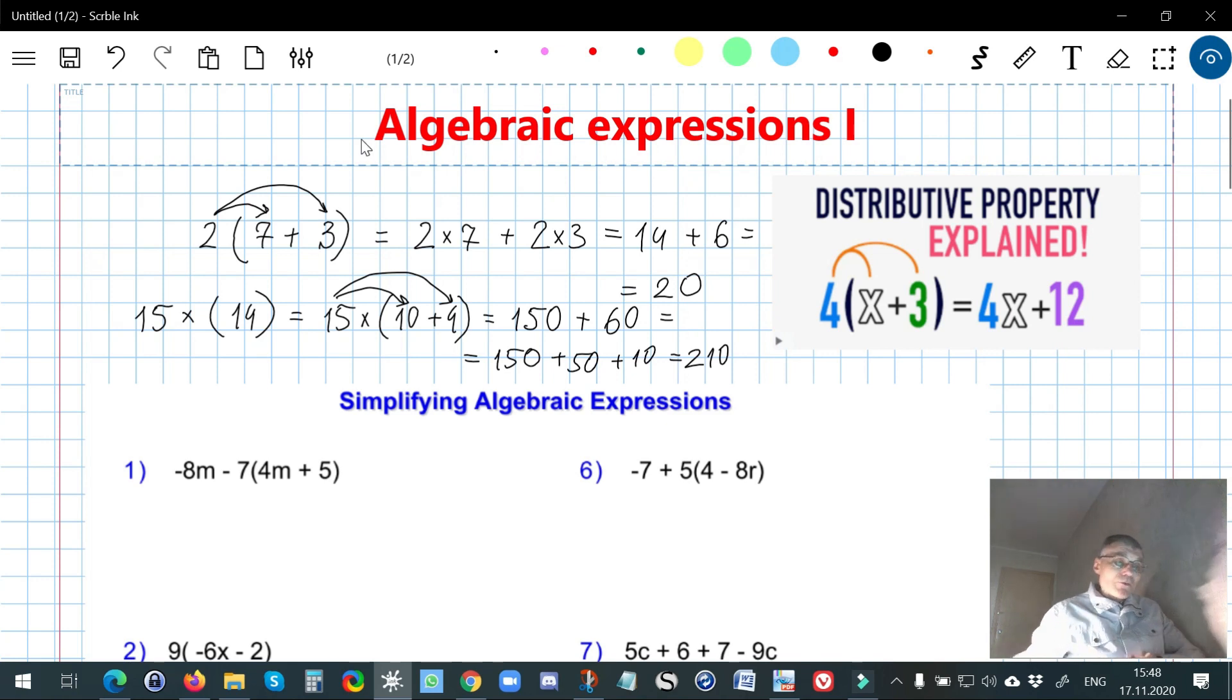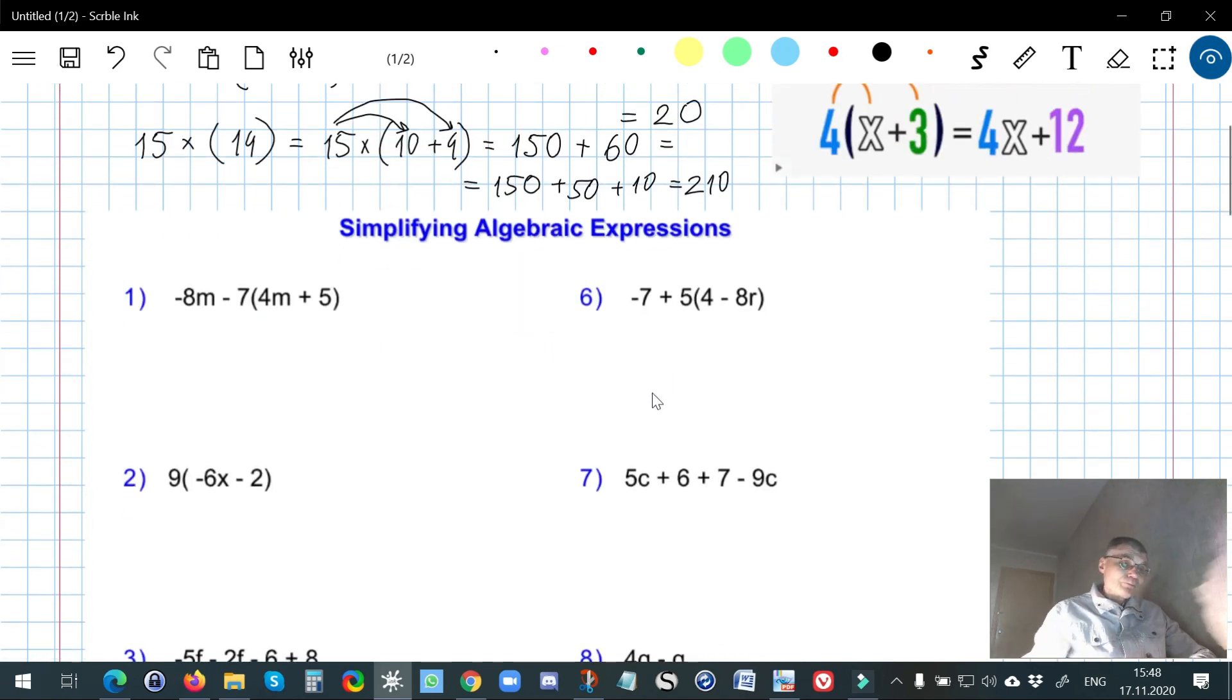Let us do the exercises from here. First, we have to open the parentheses. I keep negative 8m. And then I have to multiply not just 7, but negative 7 by everything inside the parentheses. Negative 7 multiplied by 4 gives me negative 28, and I don't forget about m, negative 28m.